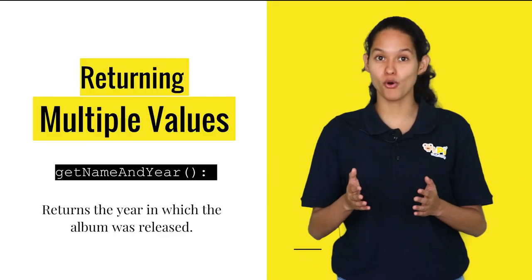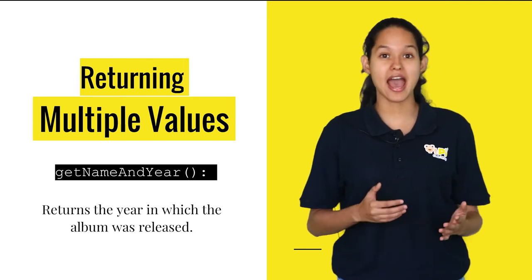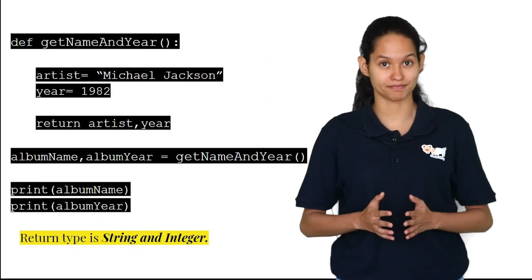If you want to retrieve both the name of the artist and the year, you can return both the name and the year in a single function. In this way, a return statement in a function can return different data types.